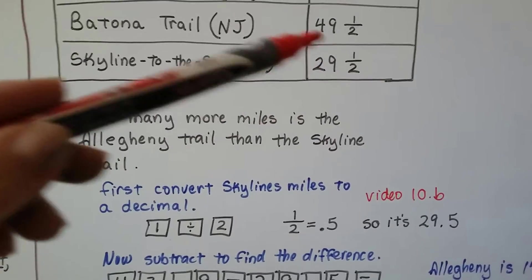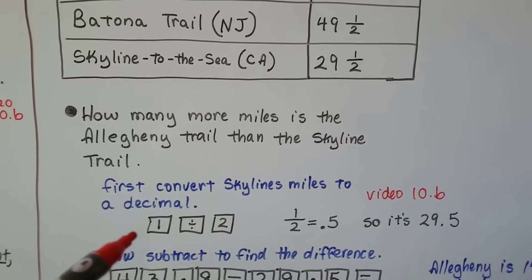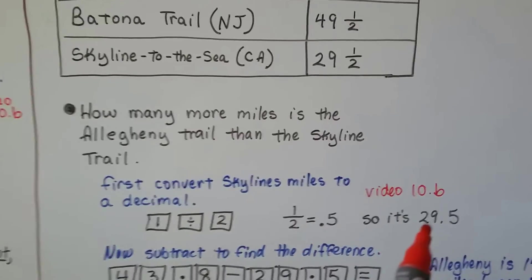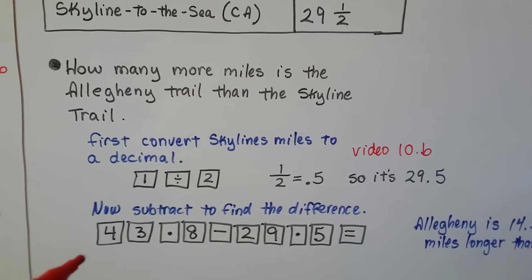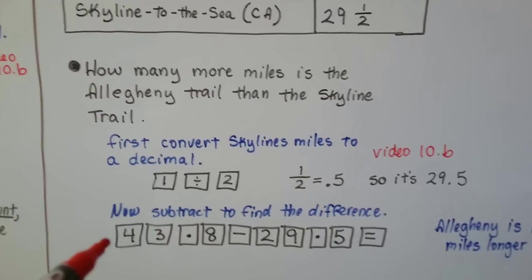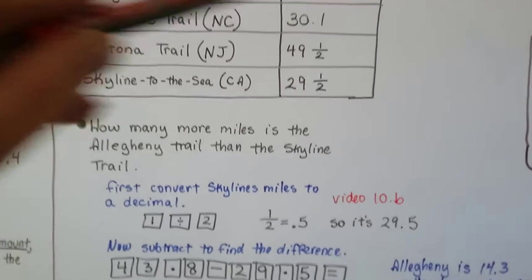This half, the 29 is going to sit off to the side. This half is 1 divided by 2, we get a .5. We put the 29 back on, we have 29.5.